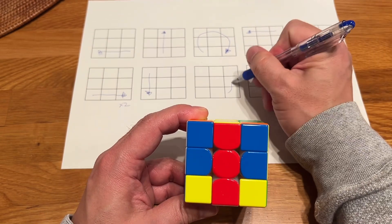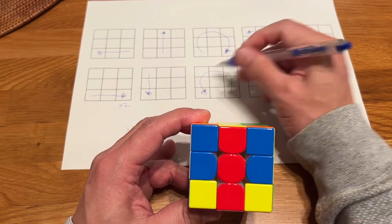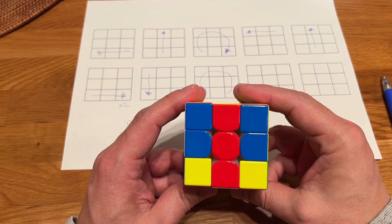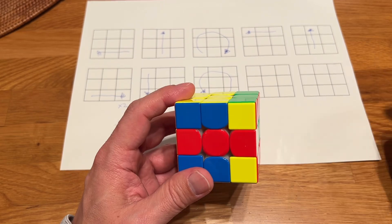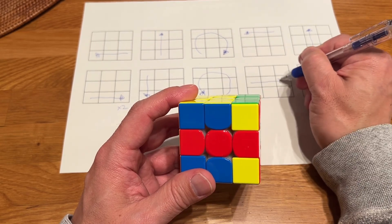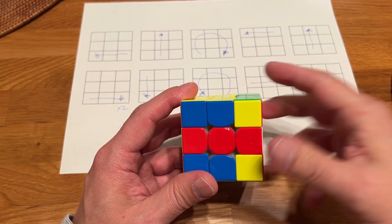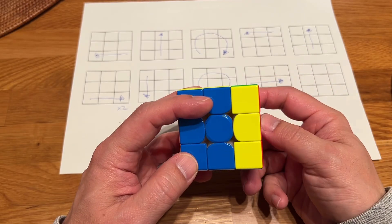And then your front, turn 90 degrees. And the middle layer from left to right. Right. Okay.